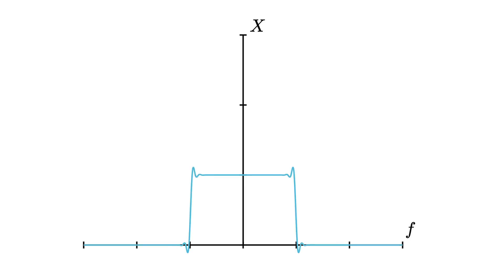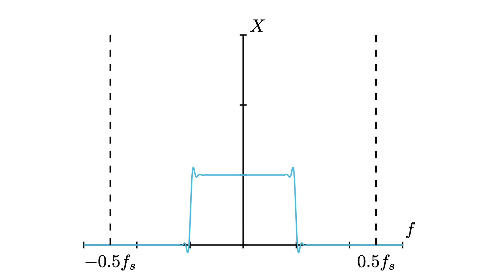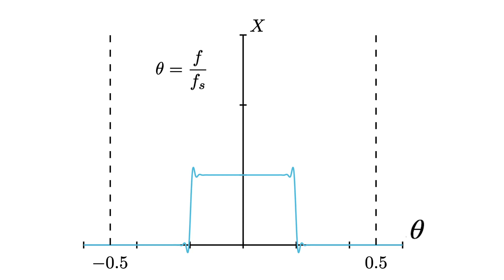This leads to a notational issue. The frequency spectrum of a sampled signal is plotted from negative 0.5 fs to positive 0.5 fs, so the x-axis depends on your sampling frequency, which isn't elegant. To fix this, we normalize frequency by the sampling frequency and introduce a new variable theta, defined as f over fs. Then the x-axis runs simply from negative 0.5 to positive 0.5. For discrete systems, we typically work with the normalized frequency theta instead of the actual frequency f — it's still a measurement of frequency, just normalized to look nicer.